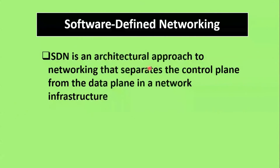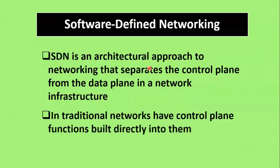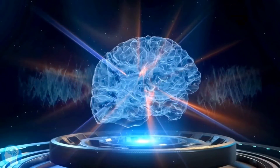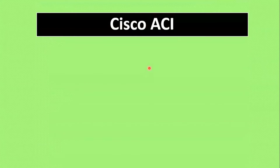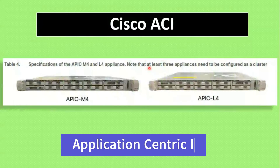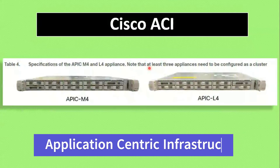SDN — Software Defined Networking — the SDN solution's key concept is to separate the control plane from the data plane. In traditional devices, the control plane is the brain of the device. But in the SDN concept, the SDN controller acts as the brain of the network — the entire control plane is centralized in the SDN controller. The SDN solution is provided by multiple vendors like HPE, Juniper, IBM, Cisco, etc.